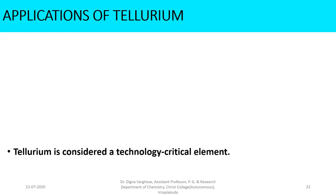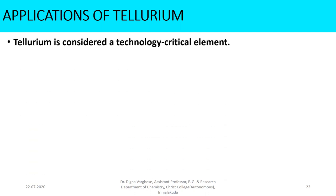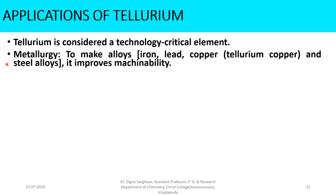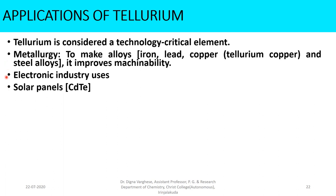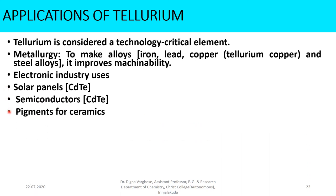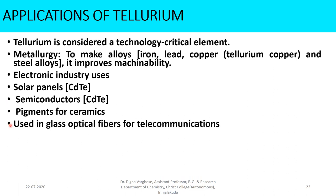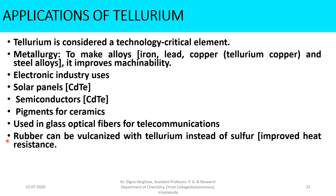Tellurium is considered a technology-critical element. It is used in metallurgy to make alloys — iron, lead, copper, tellurium-copper, and steel alloys — to improve machinability. It is also used in the electronics industry, in solar panels as cadmium telluride, in semiconductors, and in pigments for ceramics. It is also used in glass optical fibres for telecommunications. Rubber can be vulcanized with tellurium instead of sulphur, which improves its heat resistance.